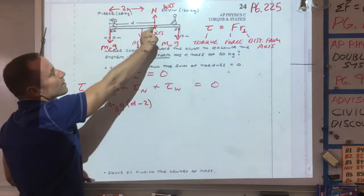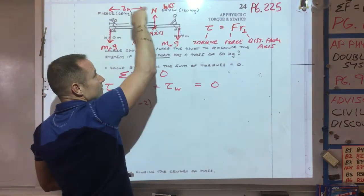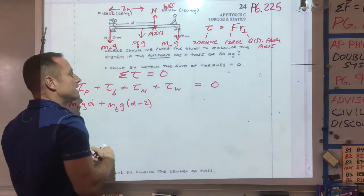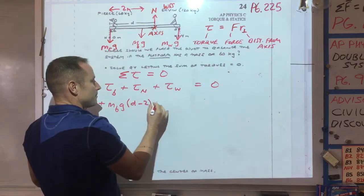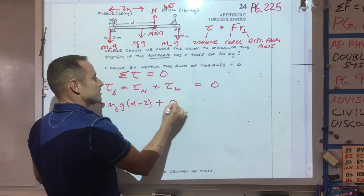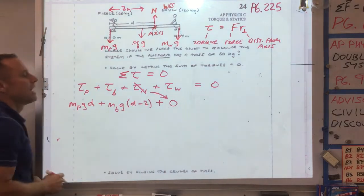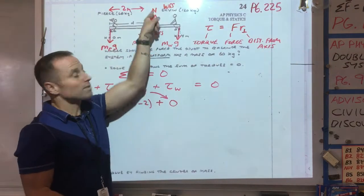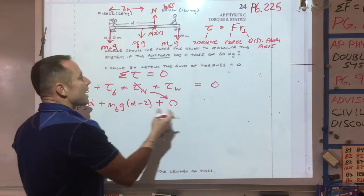Then we get to the normal force. Well, that goes right through the axis. So you can see the normal force isn't making it rotate one way or the other. So that needs to provide zero torque. I'm going to go plus zero. This thing doesn't make any torque because the force goes right through the axis. There's no sense of rotation caused by that force.